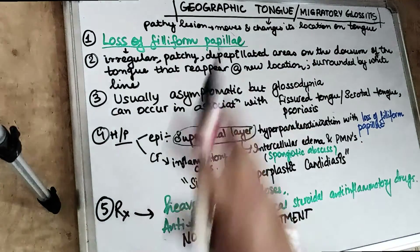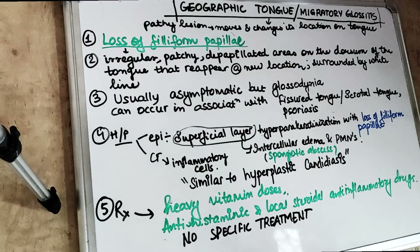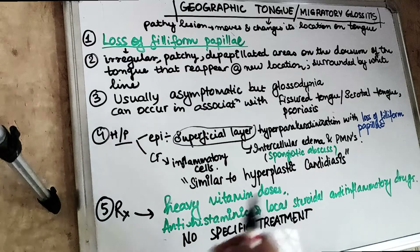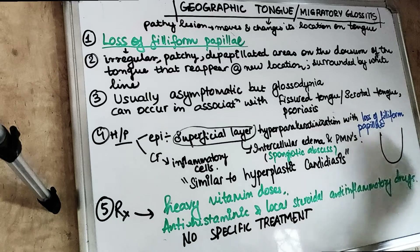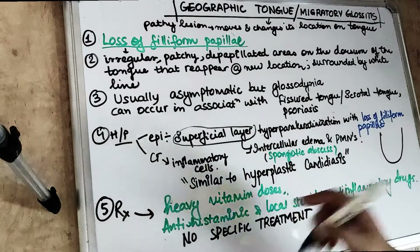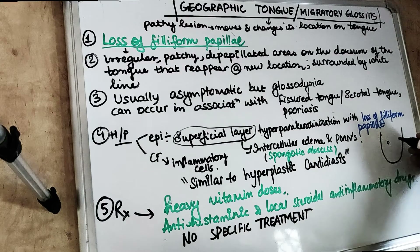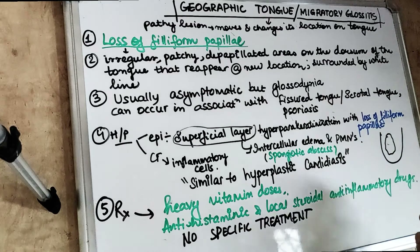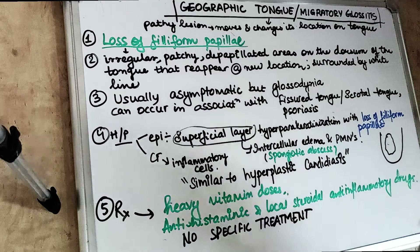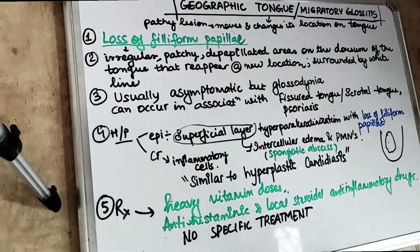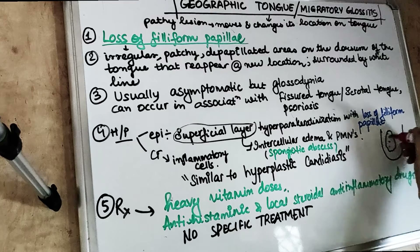It changes its position because of the depopulation of the filiform papillae of the tongue. We know there are filiform papillae and fungiform papillae present on the tongue. The filiform papillae are white in color. So when these white papillae are missing in a specific region, only the red fungiform papillae remain, and there is a presence of red dots in that area.